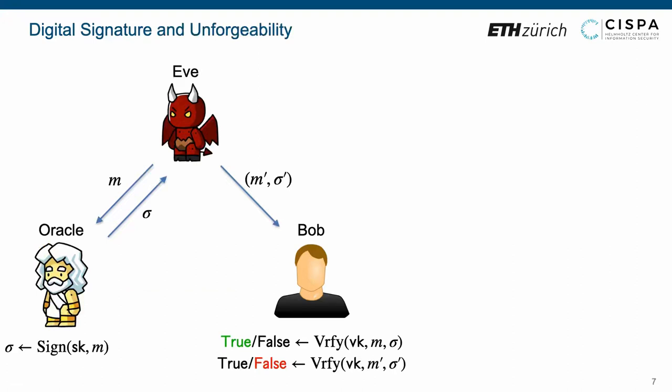In the unforgeability experiments, the signer Alice is simulated by a signing oracle that inputs a message M and outputs a real signature sigma. The adversary Eve has access to such signing oracle and finally outputs a pair of message and signature. The existential unforgeability on the chosen message attacks, we say unforgeability for short, requires the verification algorithm executed by Bob to output false if the forged message M' is unequal to any message M that has been queried to the signing oracle.